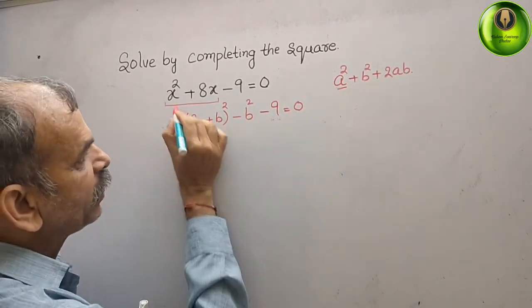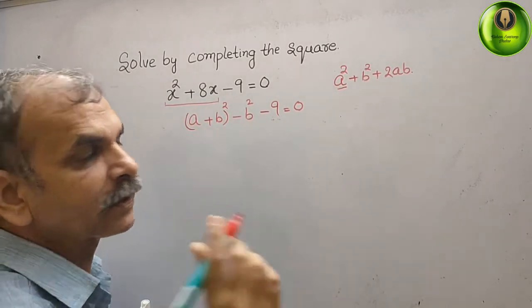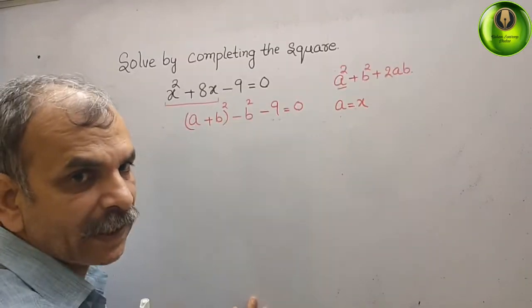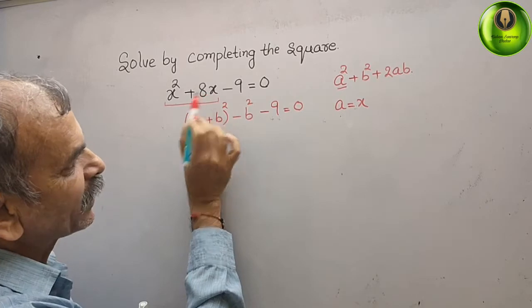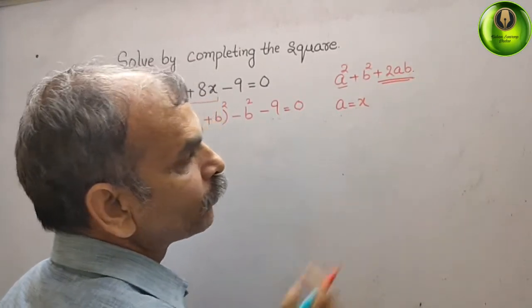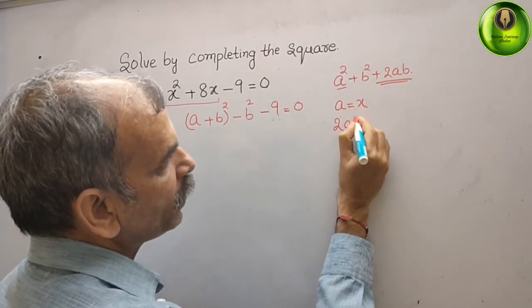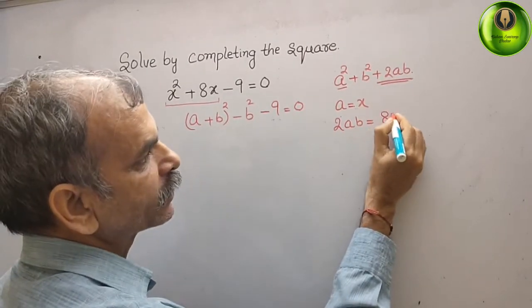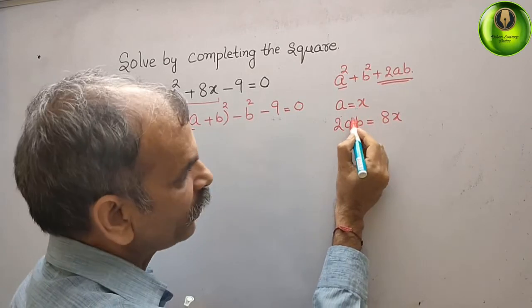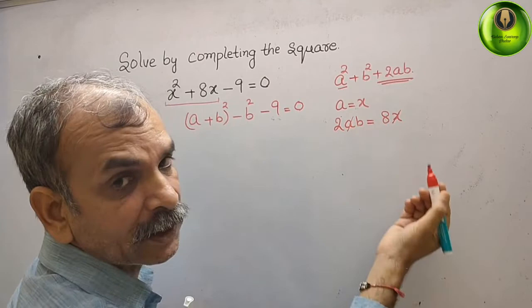Second term is your 8x, that is your plus 2ab. So we will do that only: 2ab = 8x. We know that a is x, so we can cut here directly. So b is equal to 8 by 2, that is equal to 4.